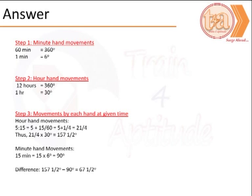Moving ahead from visualizing, we calculate what is the angle covered by each of the two hands. At 5:15 the hour hand would have covered 157.5 degrees, the minute hand would have covered at 15 minutes 90 degrees. We subtract 90 degrees from 157.5 to find the answer, that is 67.5 degrees.